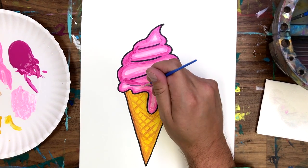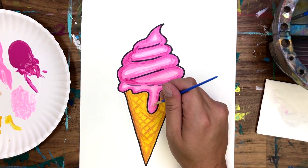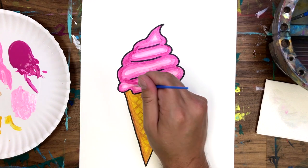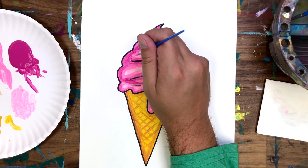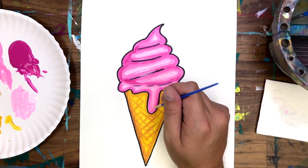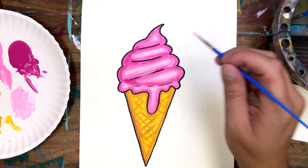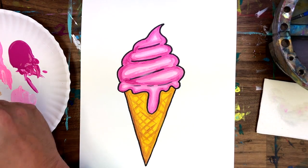I've been so busy boring you with ice cream facts, I forgot to tell you. Mix a little white in and fill in the rest of your ice cream. Over this next part, I'm just going to add some white highlights to make sure our ice cream looks nice and shiny.